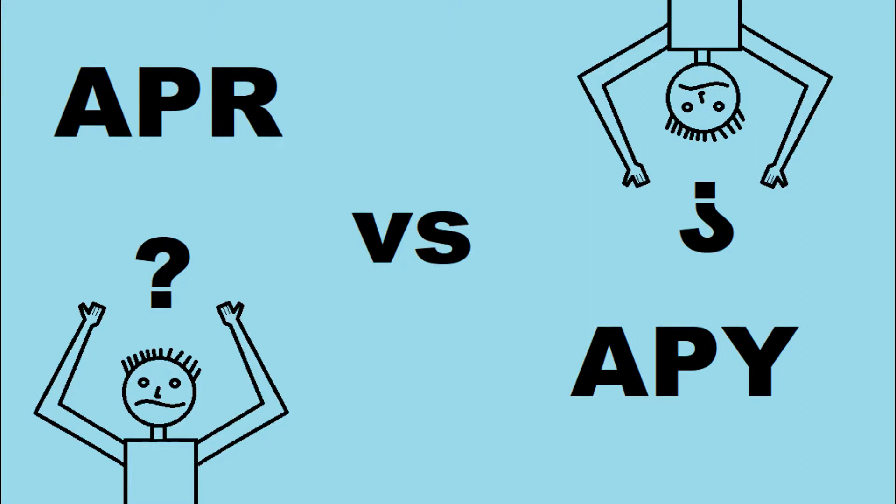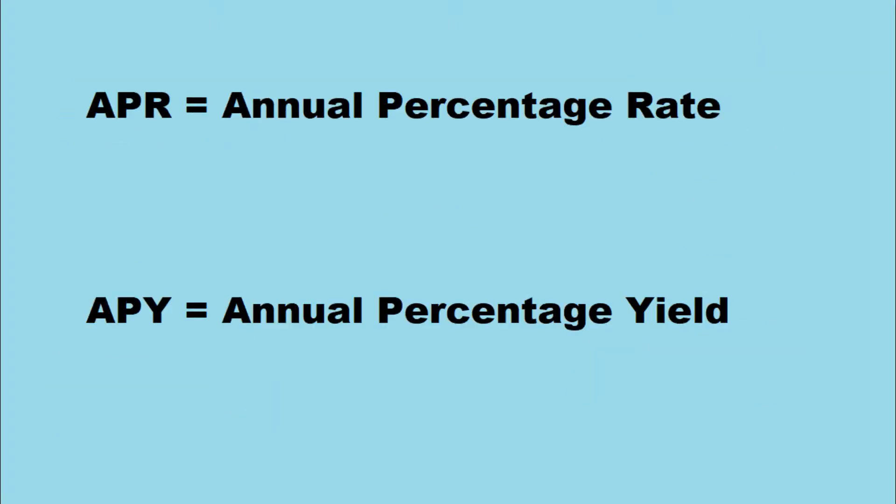If you ever wondered what the difference between APR and APY was, this video is for you. APR simply stands for Annual Percentage Rate, and APY stands for Annual Percentage Yield.